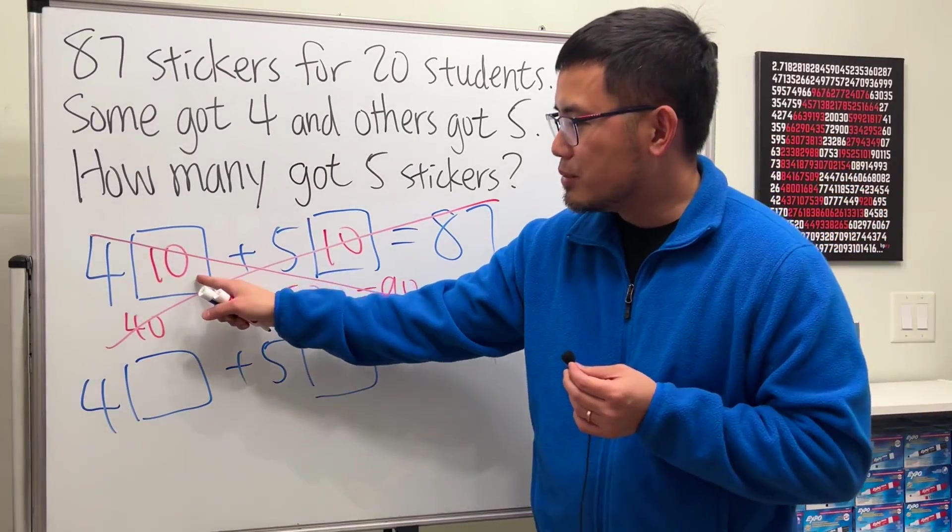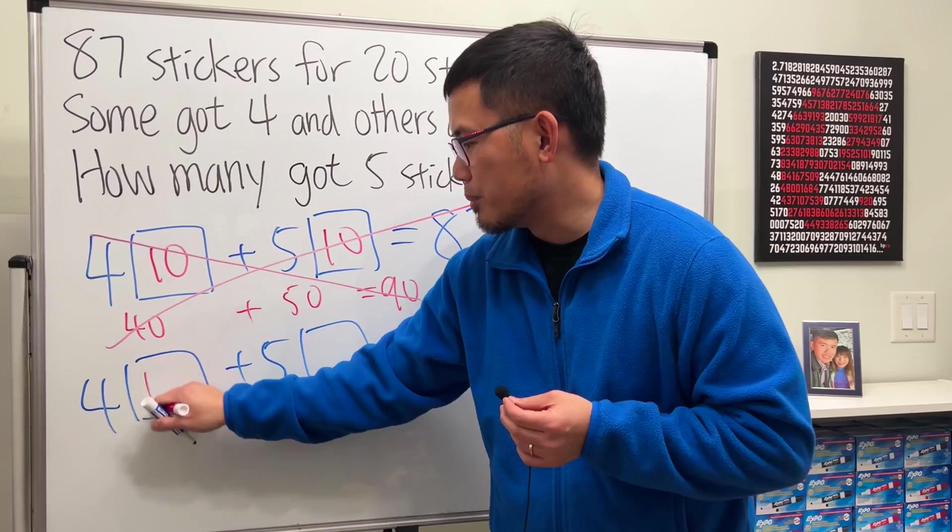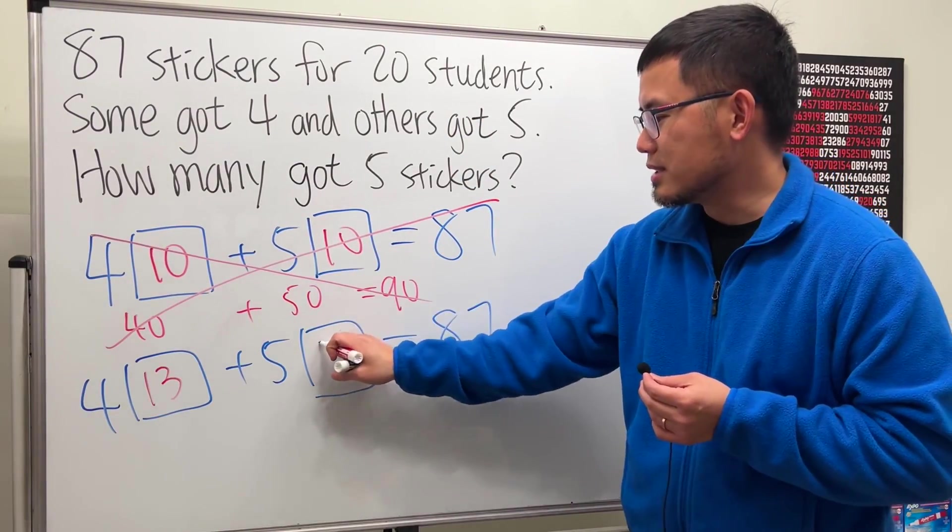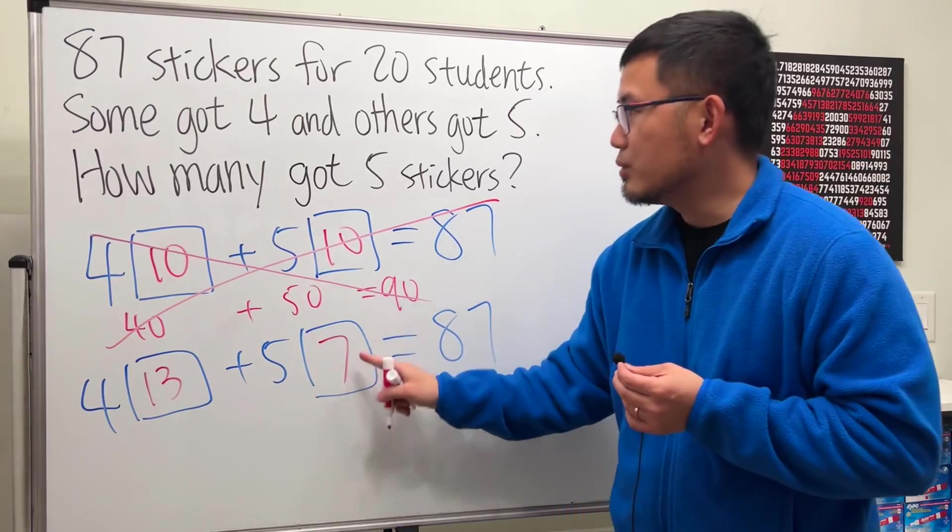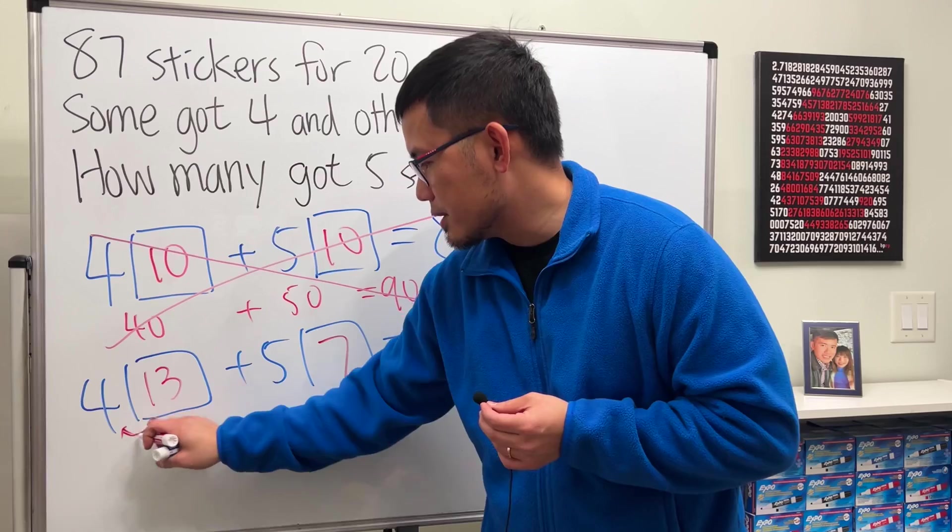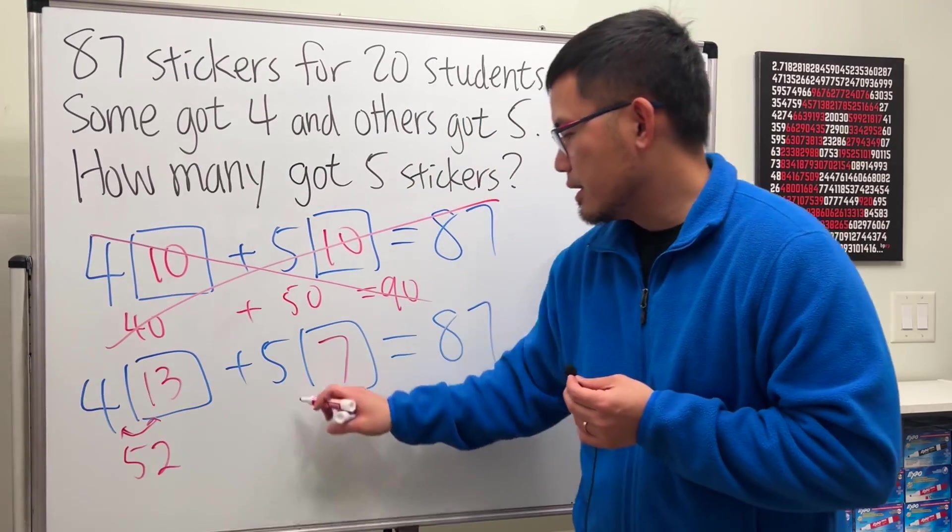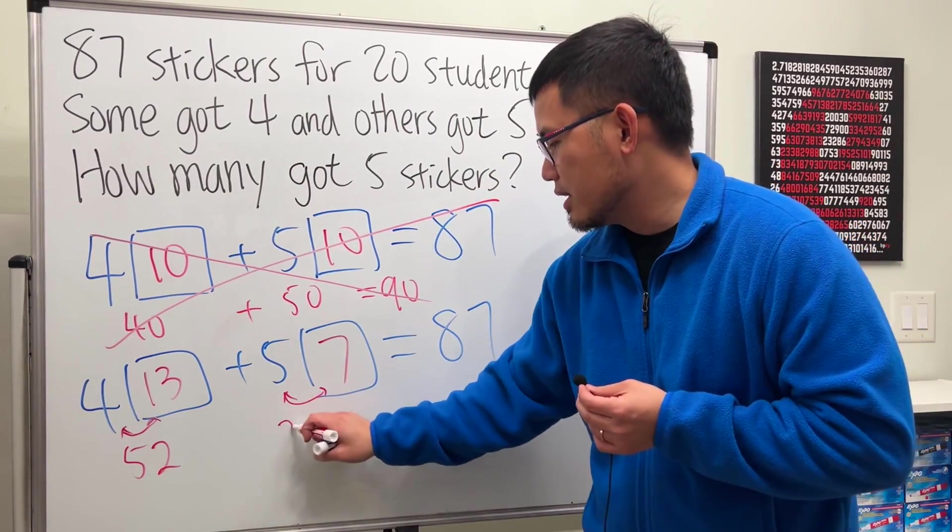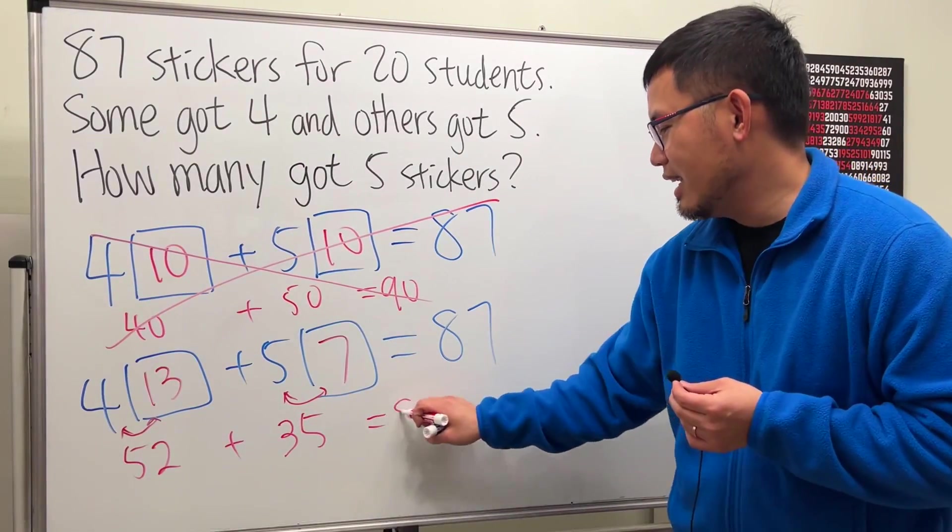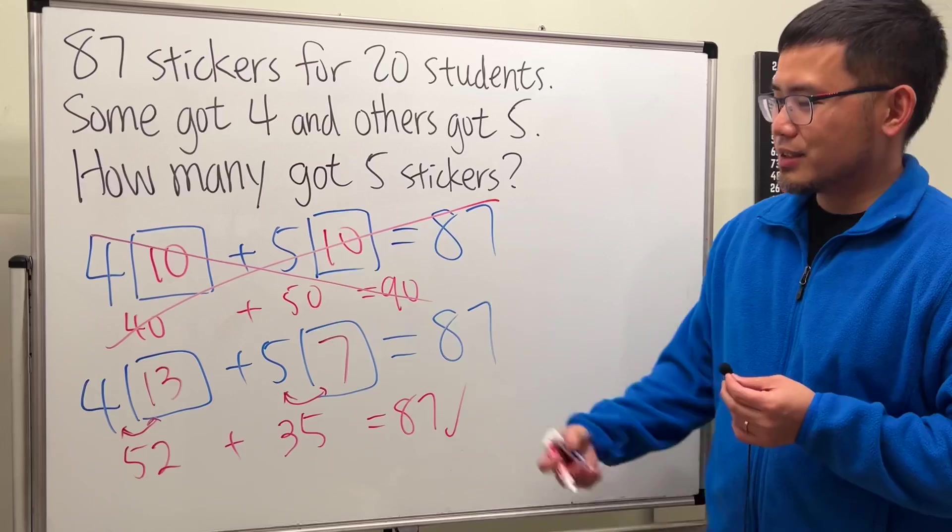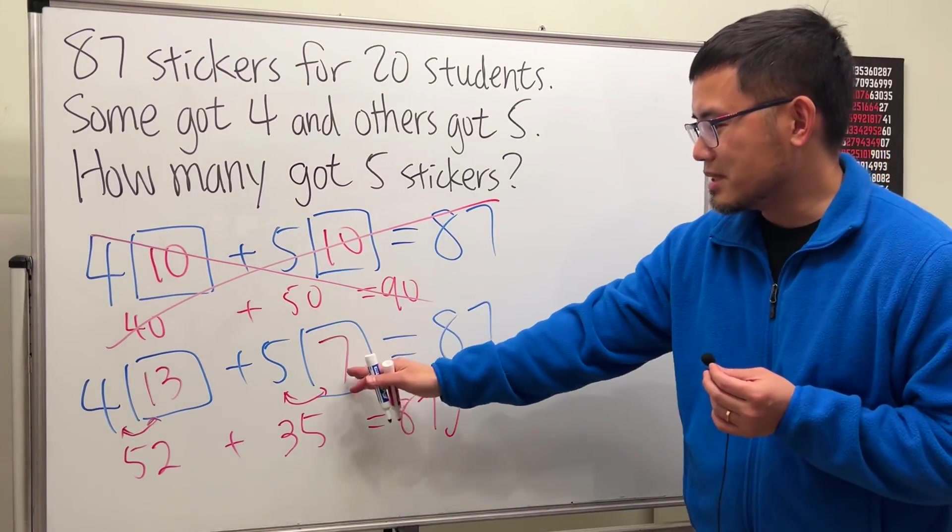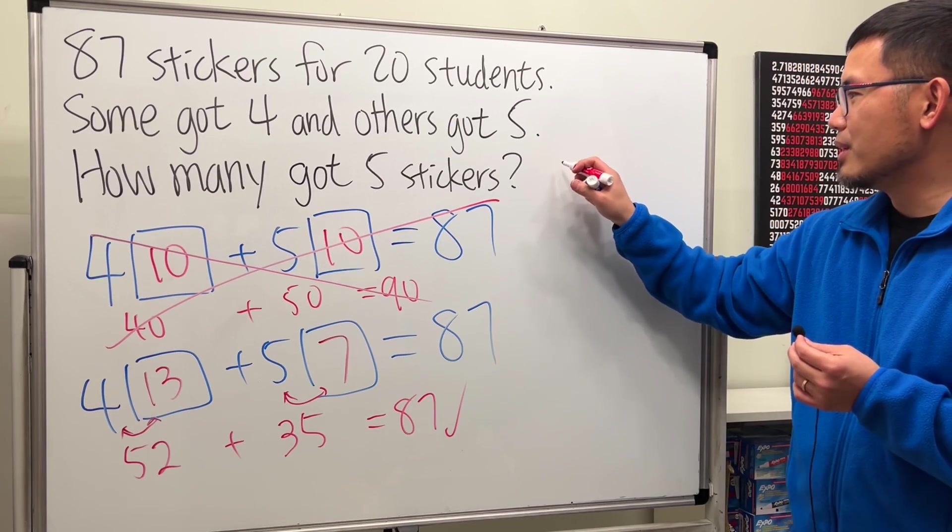So let's see. Four times something plus five times something, I need to end up with 87. I need to have three more people receive less stickers, so that will be 13, and then three less people here, so seven. Together we do end up with 20 students, yeah. And you see, if you multiply this and that, we get 52. If you multiply this and that, 35. Add them up, we do end up with 87.